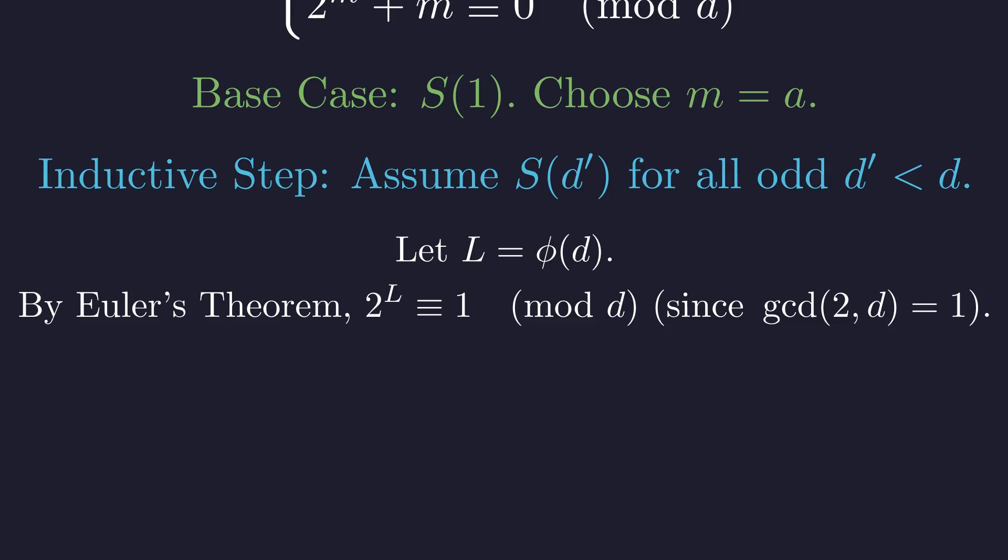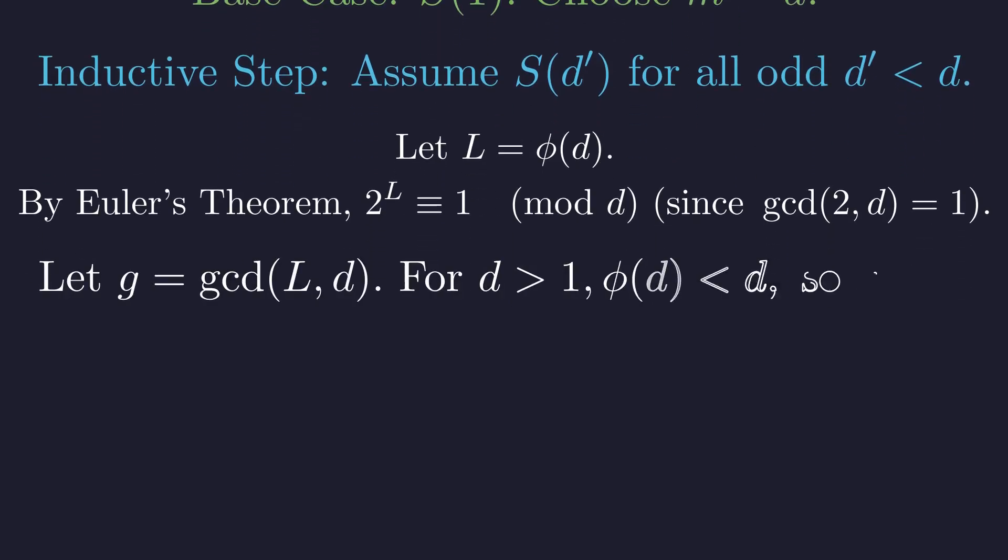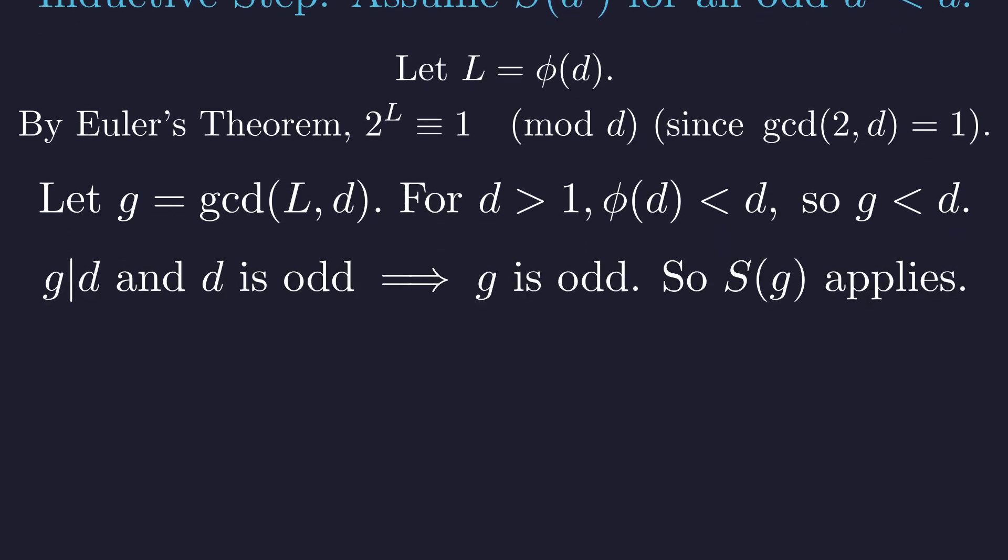Euler's totient theorem gives us control over the exponent. Let g be the gcd of L and d. Since for d greater than 1, phi of d is less than d, it follows that g is strictly less than d. Since g divides the odd number d, g must also be odd. As g is an odd integer less than d, our inductive hypothesis, S of g, applies.